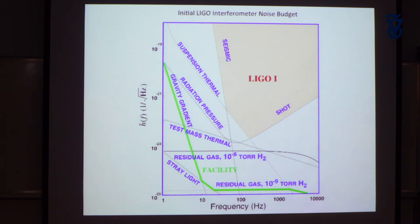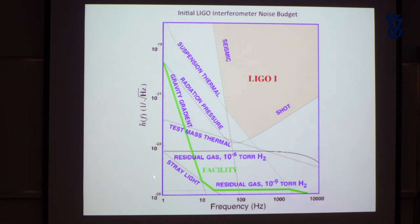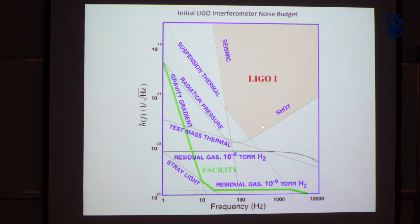Here is a plot of the initial detector's noise — frequency on the x-axis from 1 Hz to 10 kHz, and the amplitude spectral density of the strain H on the y-axis. The detector achieved around 10⁻²³ per root hertz near 100 Hz, which translates to an rms strain of a few times 10⁻²² — just barely better than what Kip needed.